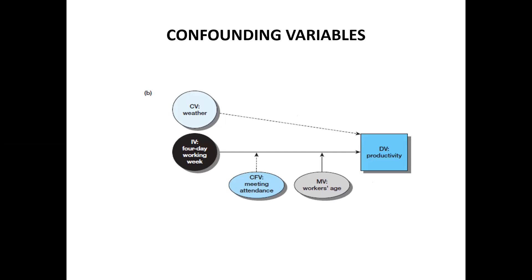The last topic covered was control variables. When we include external variables in the study, we generally include them in the form of a control variable. In our example, weather is acting as the control variable, the independent variable was working week, productivity was the dependent variable, and the moderating variable was workers, which we call the interaction variable.